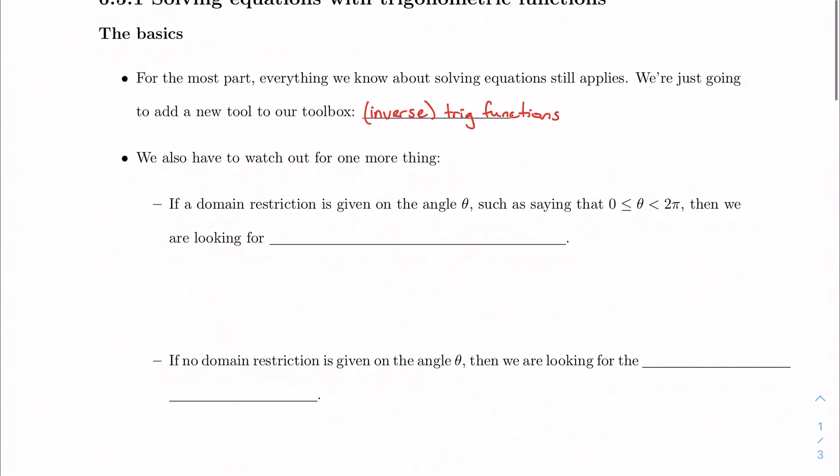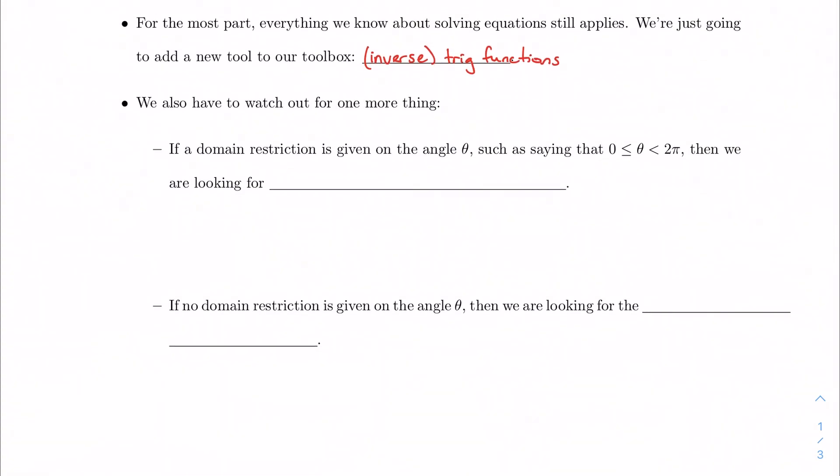We also have to watch out for one more thing, and that's in the way that the problem is worded. If a domain restriction is given on the angle theta, such as saying theta falls between 0 and 2π, then if we're given that restriction, we're looking for what's called a particular or a set of particular solutions.